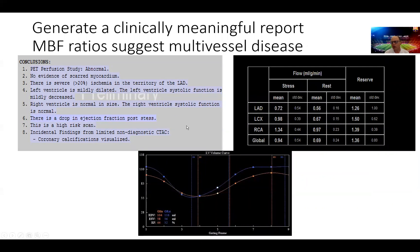So this is how we interpret the study. This is more than 20% of the ventricle was ischemic. We have a drop in ejection fraction, high risk scan.